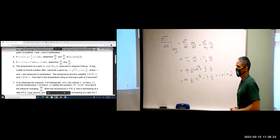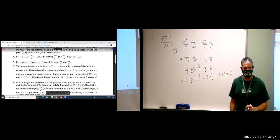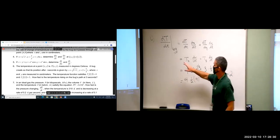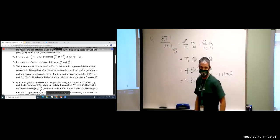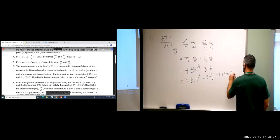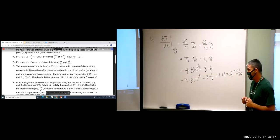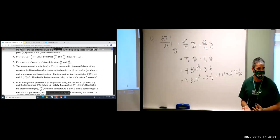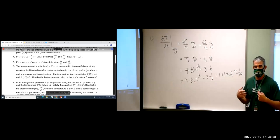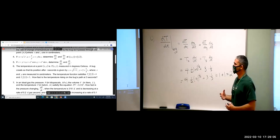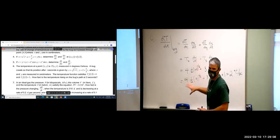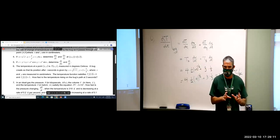That gives us 2. Now what are the units on that 2? Going back to where we started: capital T is in degrees Celsius, and little t is in seconds. So the answer is 2 degrees Celsius per second. The centimeters for x and y weren't relevant for the final answer, because we were looking at how fast temperature changes with respect to time, not with respect to distance. That's why I wanted to go through number six — to show how the pieces of the chain rule can be pulled out of these contextual problems.